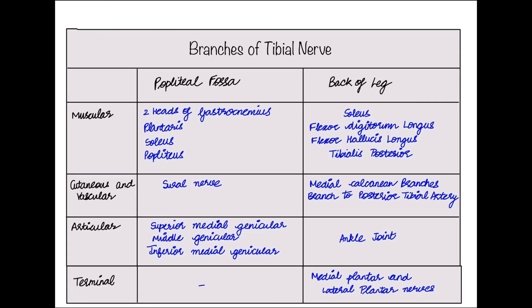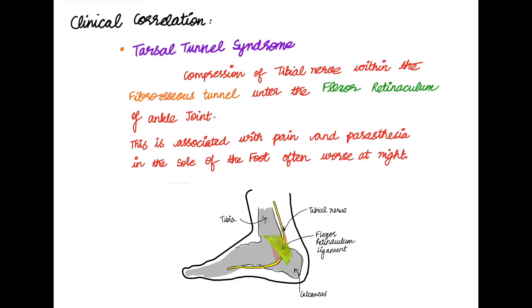This table shows the branches of the tibial nerve in the popliteal fossa and the back of the leg. The terminal branches of the tibial nerve are the medial plantar nerve and the lateral plantar nerve.